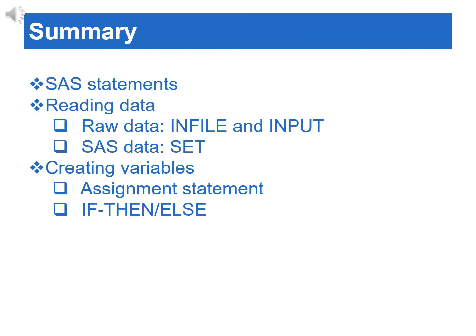Now let's review what we've learned so far. In this section, we've learned how to write simple SAS data step programs. The building blocks of a SAS data step are statements. One of the most common mistakes is missing the semicolon at the end of the statement. We also learned how to create a SAS data set by either reading in a raw data set or a SAS data set. To read a raw data set, we need to use the infile and input statements in the data step. To read a SAS data set, we use the set statement. Lastly, we learned how to create variables by using an assignment statement or an if-then statement.